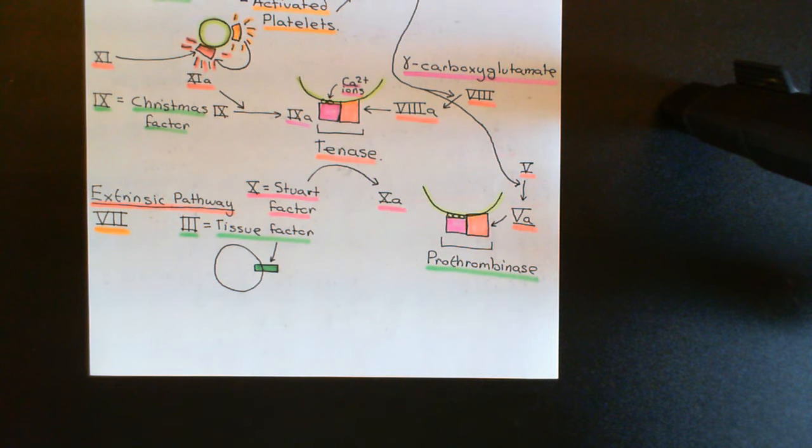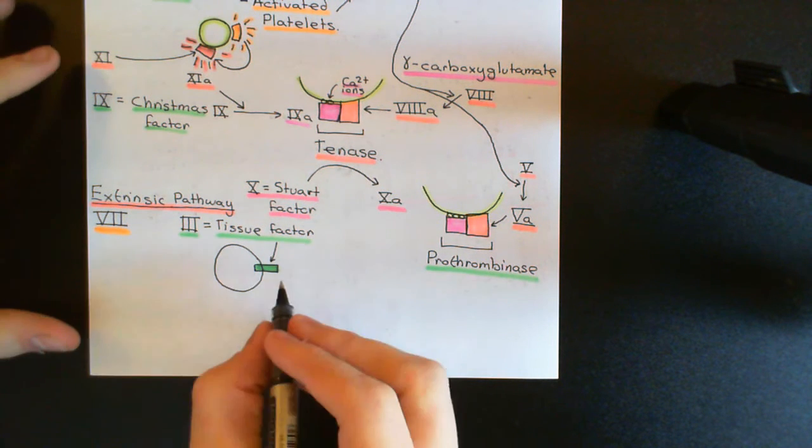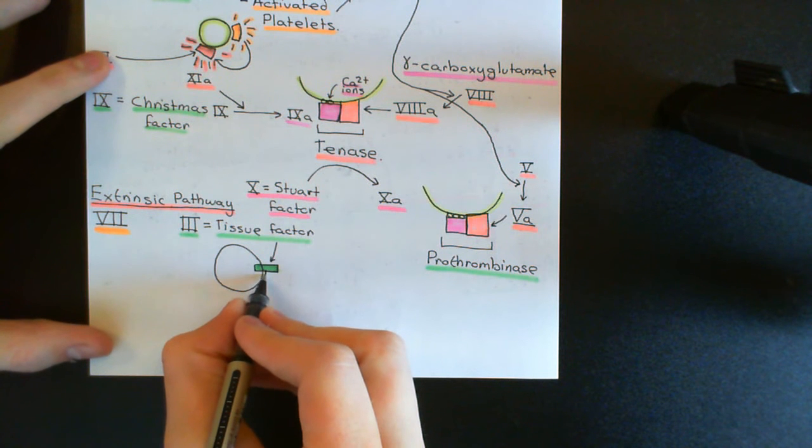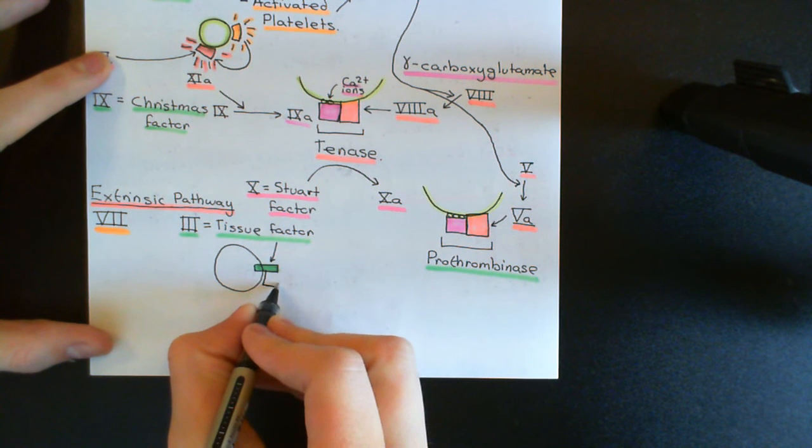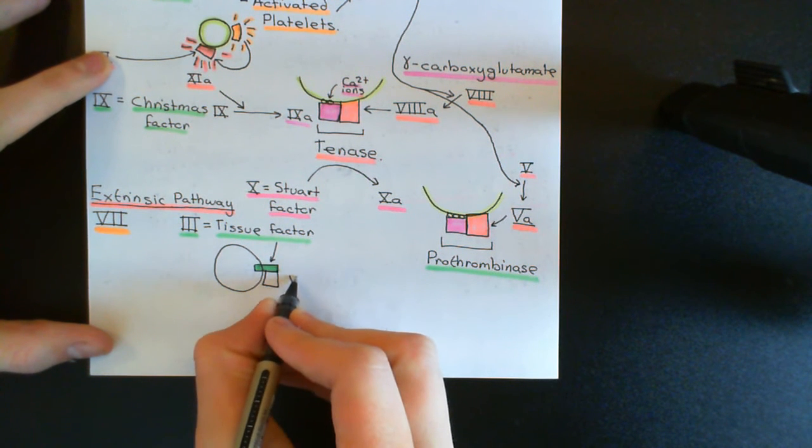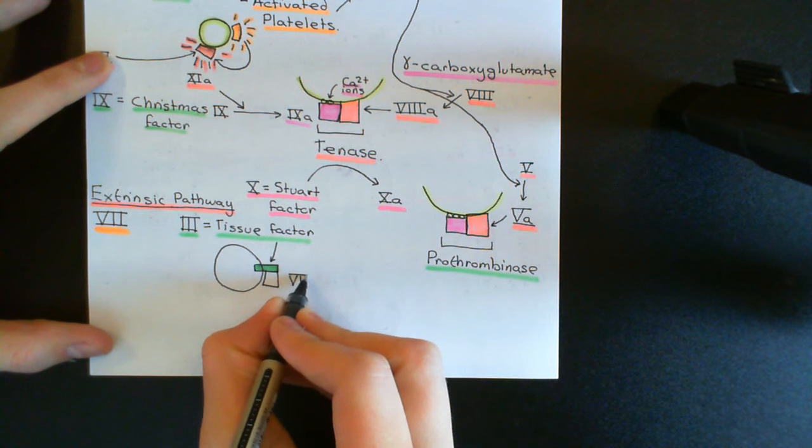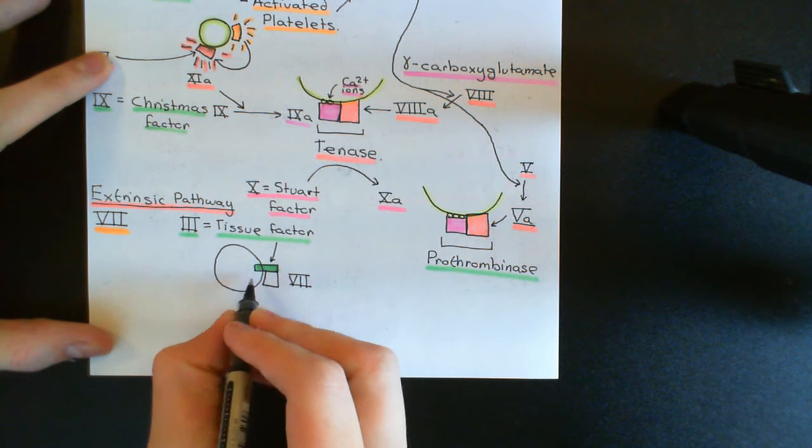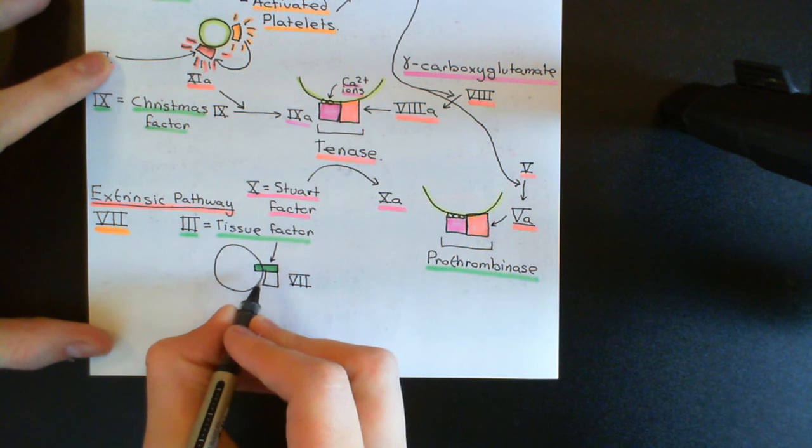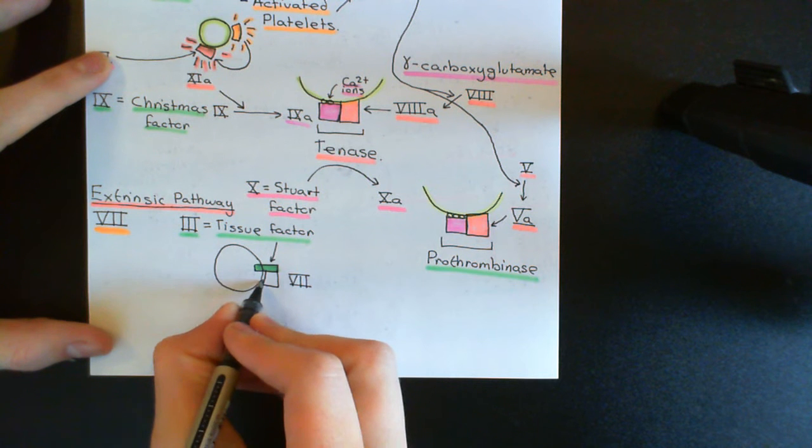And those cells, the cells that are further back in the vessel wall, they will have tissue factor on their surface. So now factor 7 will come into contact with factor 3. And what happens is it's going to bind to factor 3 here. Here it comes, here is factor 7 binding to factor 3 and it forms a complex with it that also requires calcium.